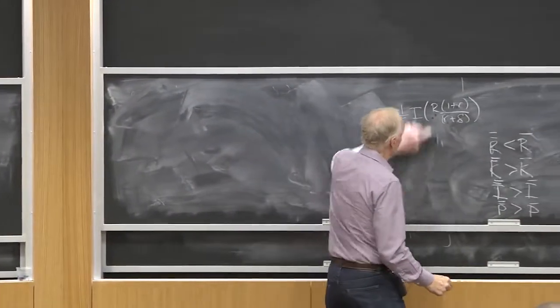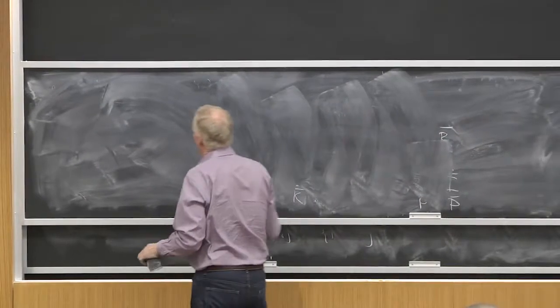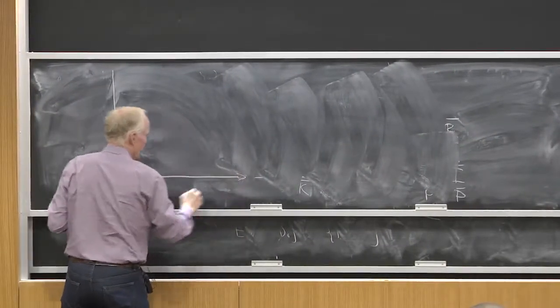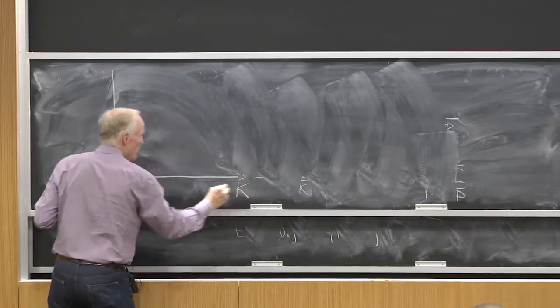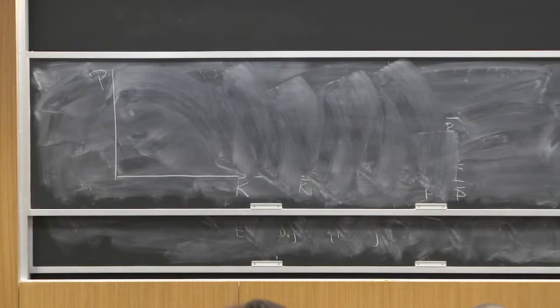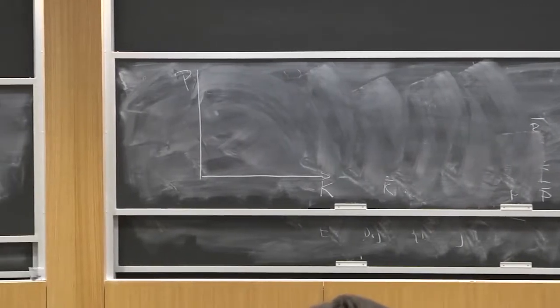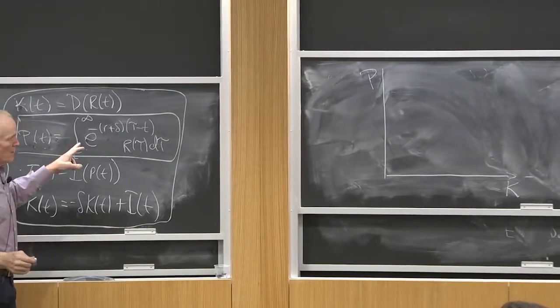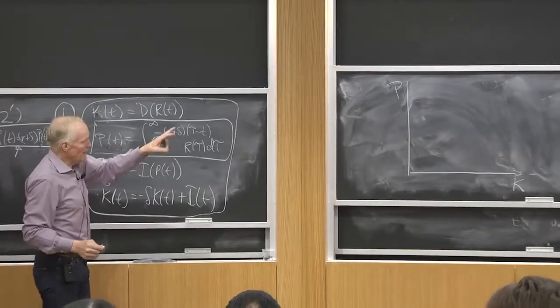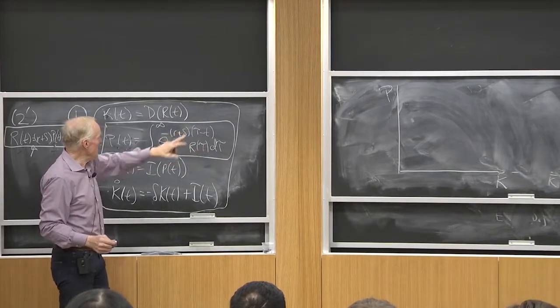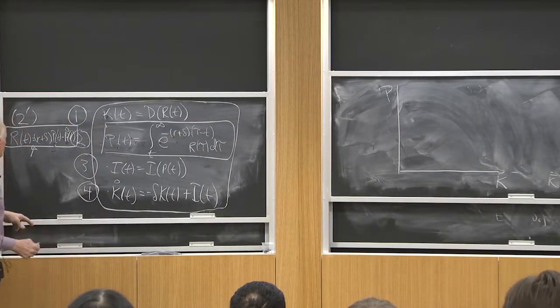So, what am I going to do? I'm going to make a graph in which I'm going to put k here and I'm going to put p here. It's a lot like my old graph, but the big difference is I am going to put k and p rather than k and r.